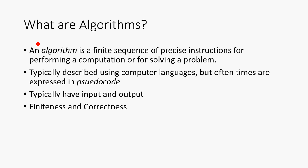So first, what are algorithms? An algorithm is a finite sequence of precise instructions for performing a computation or for solving a problem. Typically, they're described using computer languages, but oftentimes we can express them in pseudocode, which is kind of like a plain English version of algorithms. And they typically have input and output, and they tend to be finite and correct.